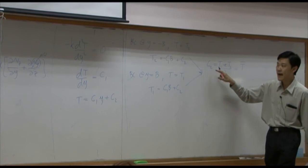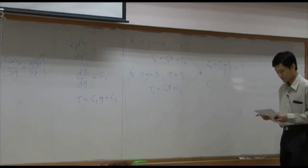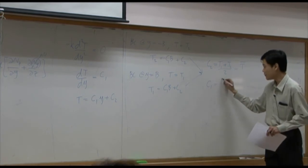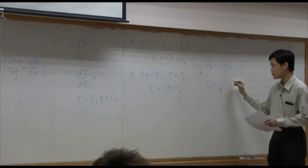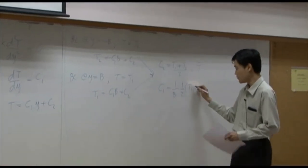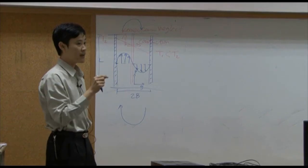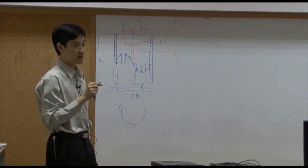Take C2 back to either one, you can solve for C1, and at the end you have C1 equal to 1 over B times 1 over 2, T1 minus T2, side of delta y.